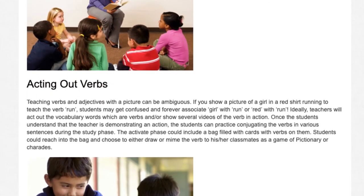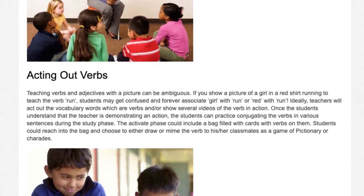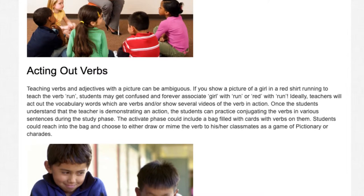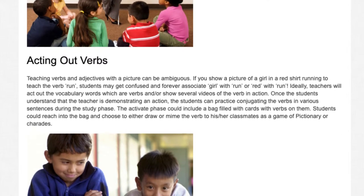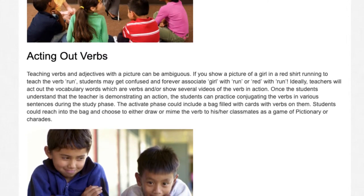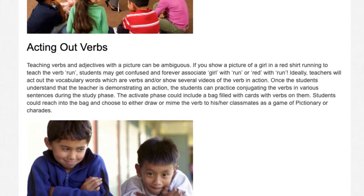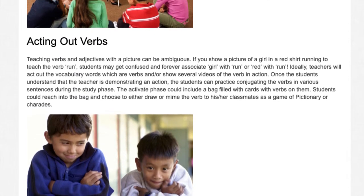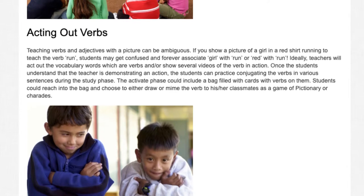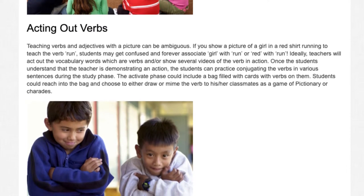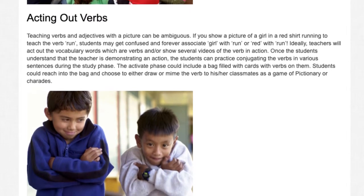Teaching verbs and adjectives with a picture can be ambiguous. If you show a picture of a girl in a red shirt running to teach the verb 'run,' students may get confused and forever associate 'girl' or 'red' with 'run.' Ideally, teachers will act out the vocabulary words which are verbs, or show several videos of the verb in action. The activate phase could include a bag filled with verb cards — students could draw or mime the verb to classmates as a game of Pictionary or charades.